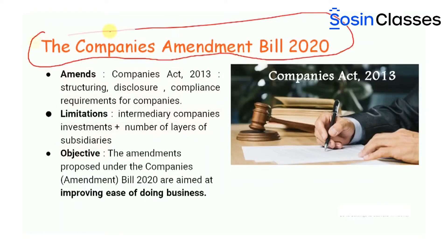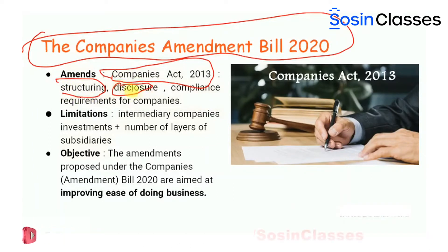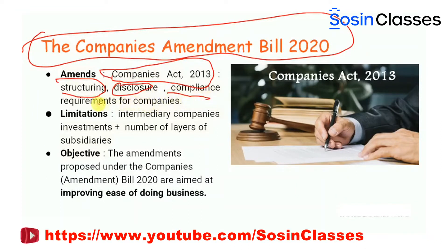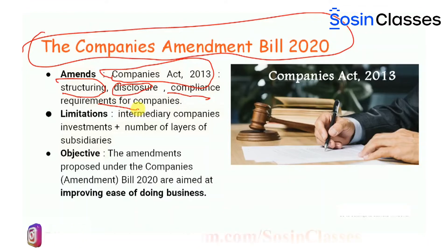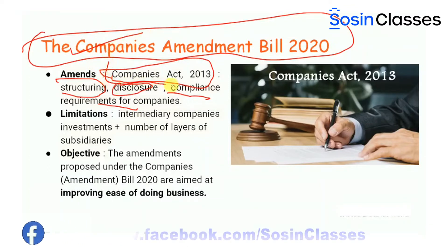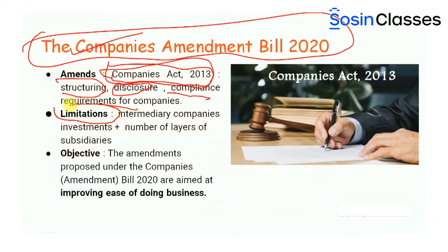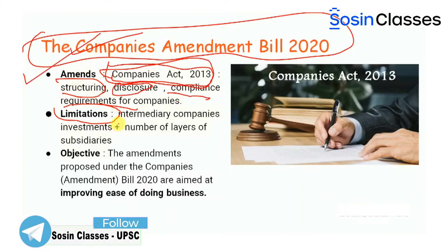The Companies Amendment Bill 2020 seeks to amend the Companies Act of 2013 with respect to the structuring, the disclosure — that is all the facts and other details — and the compliance requirements for the companies, that is the rules and regulations that a particular company would have. The Companies Act of 2013 had certain limitations, and under this bill, these limitations will be removed.